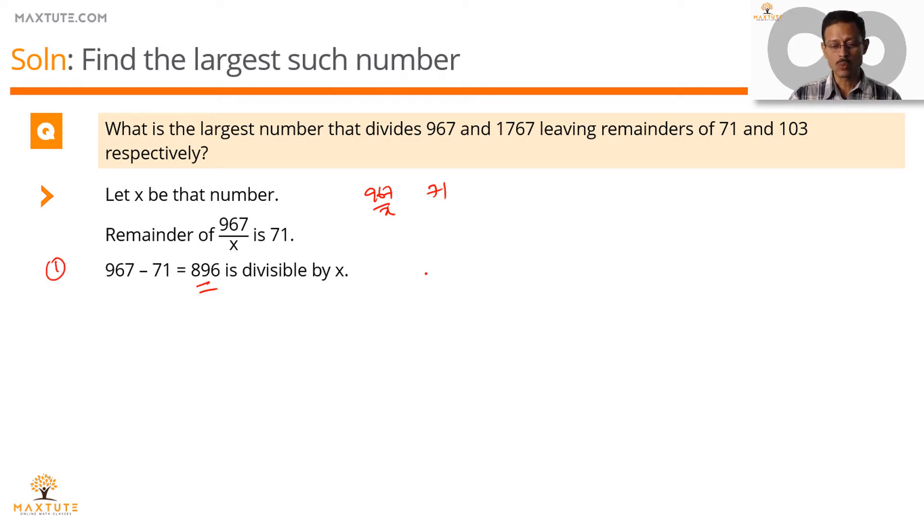Let's move to the second part, 1767 divided by x, the remainder is 103. So we subtract 103 from 1767, which is 1664 will be divisible by x. This is inference number 2.